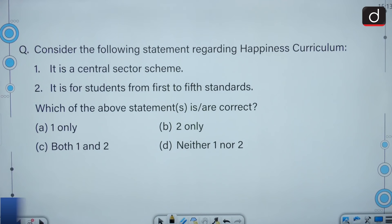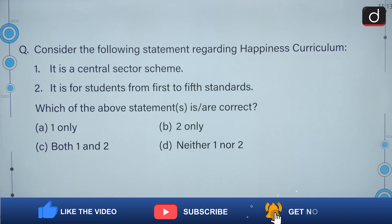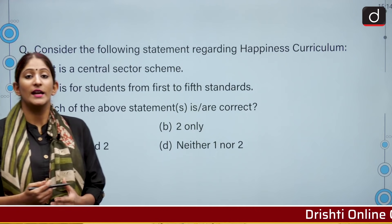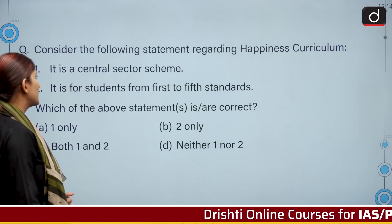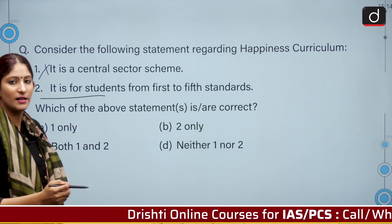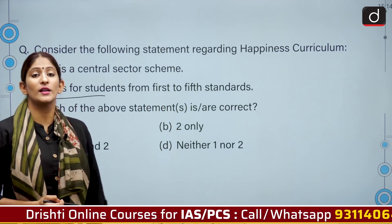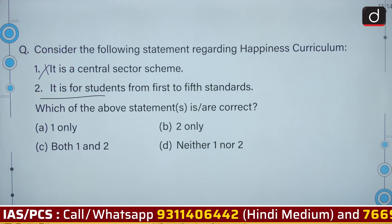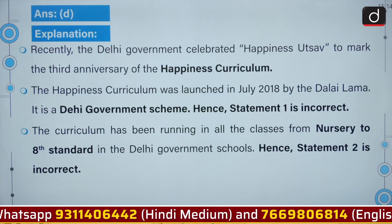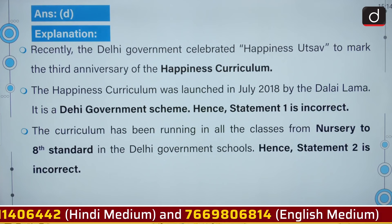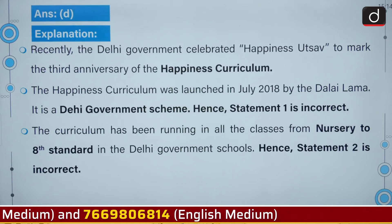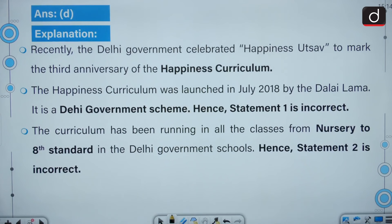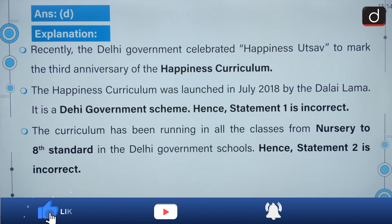Consider statements regarding the Happiness Curriculum: it is a central sector scheme, and it is for students from first to fifth standards. If we talk about the Happiness Curriculum, it is actually a project of the Delhi government — so the first statement is incorrect. The second statement is also incorrect because it covers students from nursery to eighth standard. The correct answer is option D: neither one nor two. The curriculum was launched in July 2018 by the Dalai Lama and runs in Delhi government schools.